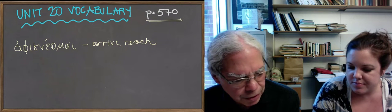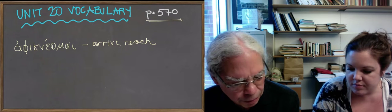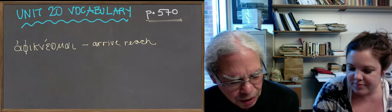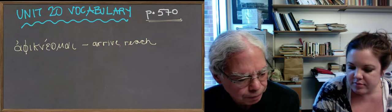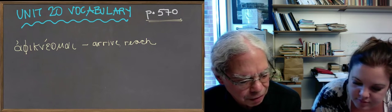The next verb is de, the verb to be necessary. It is necessary, an impersonal verb, and it also means there is need as well as it is necessary. The principal parts are de, deese, deese aorist.